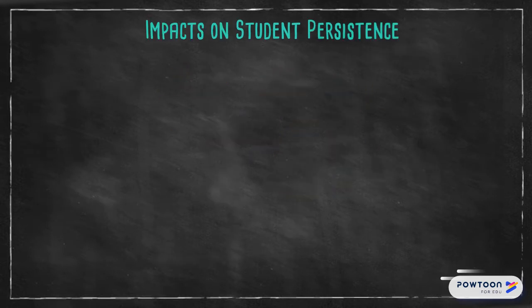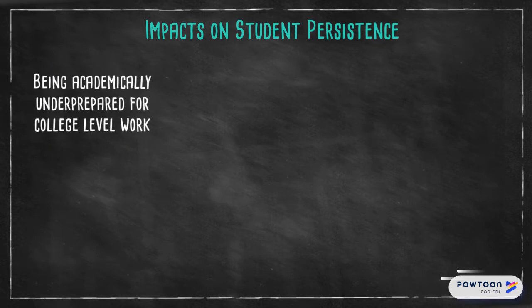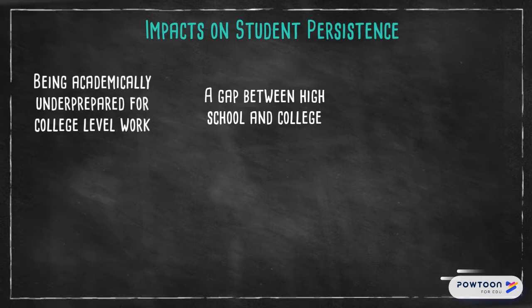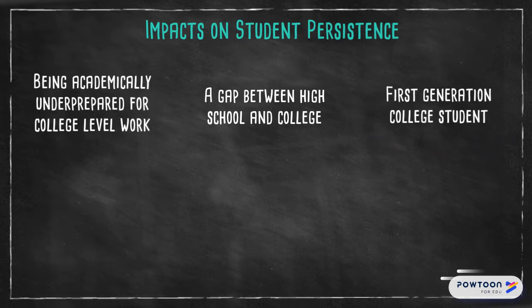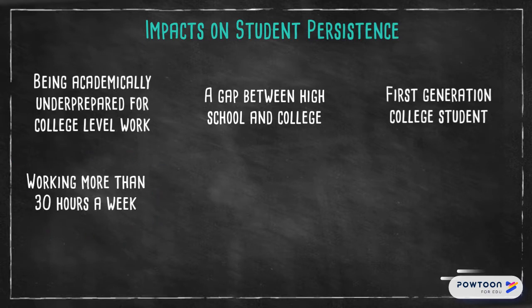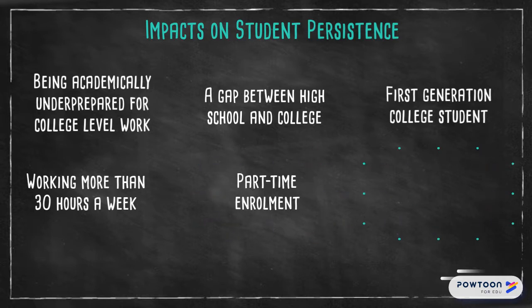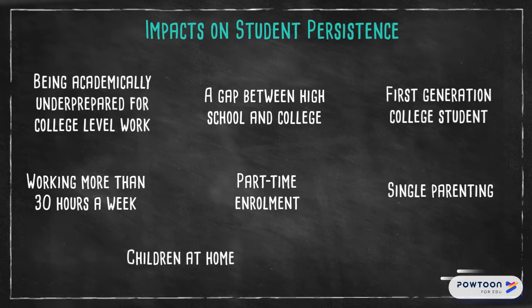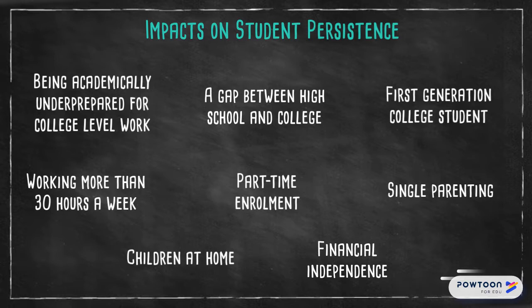There are a number of factors that can affect student success. Koo identified several risk factors: being academically underprepared for college-level work; a gap between high school and college; being a first-generation college student; working more than 30 hours a week; part-time enrolment; single parenting or having children at home; and financial independence — meaning having no partner or family to rely on for financial support.